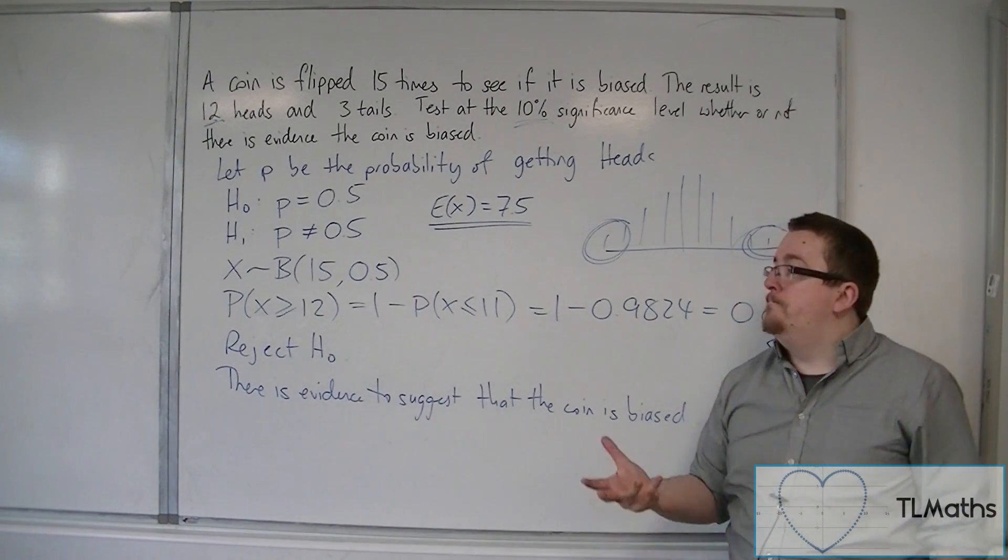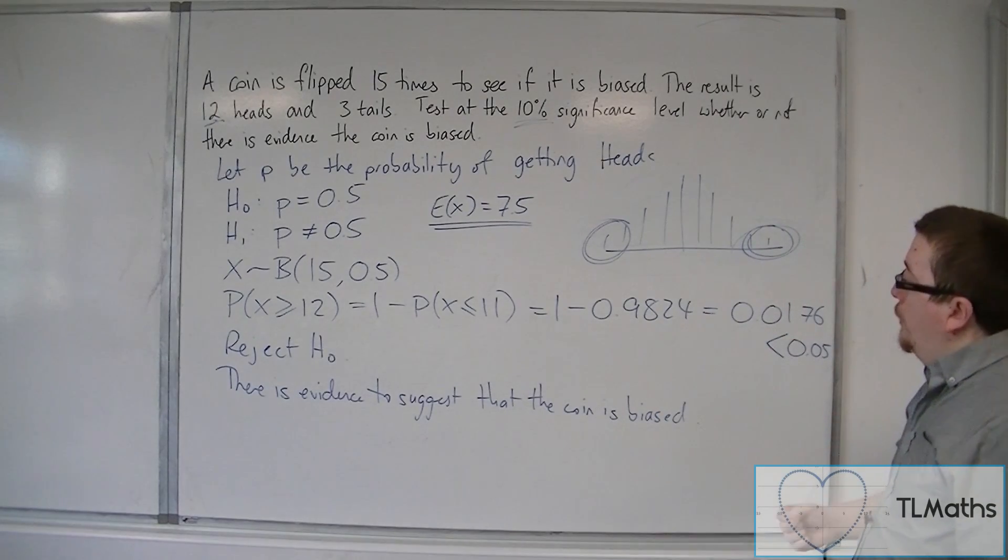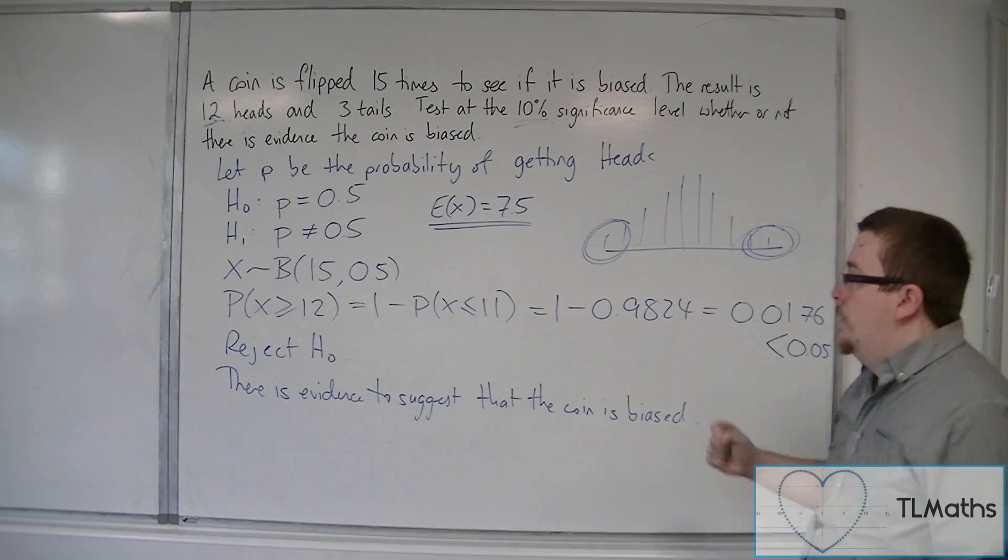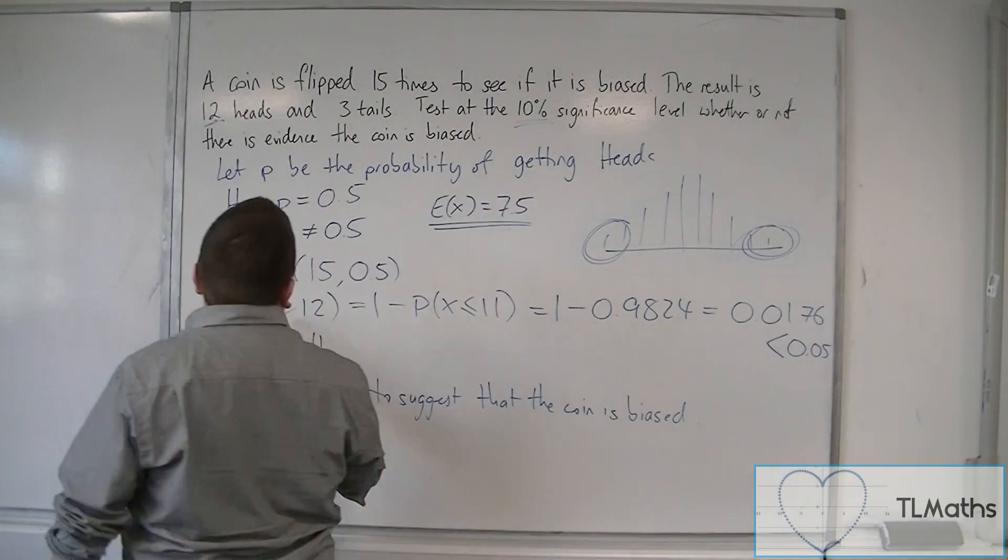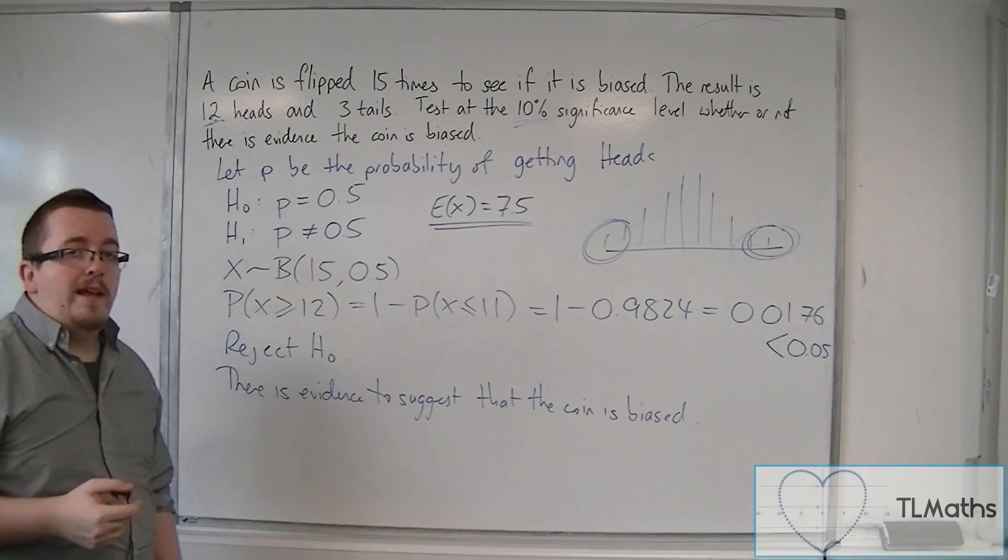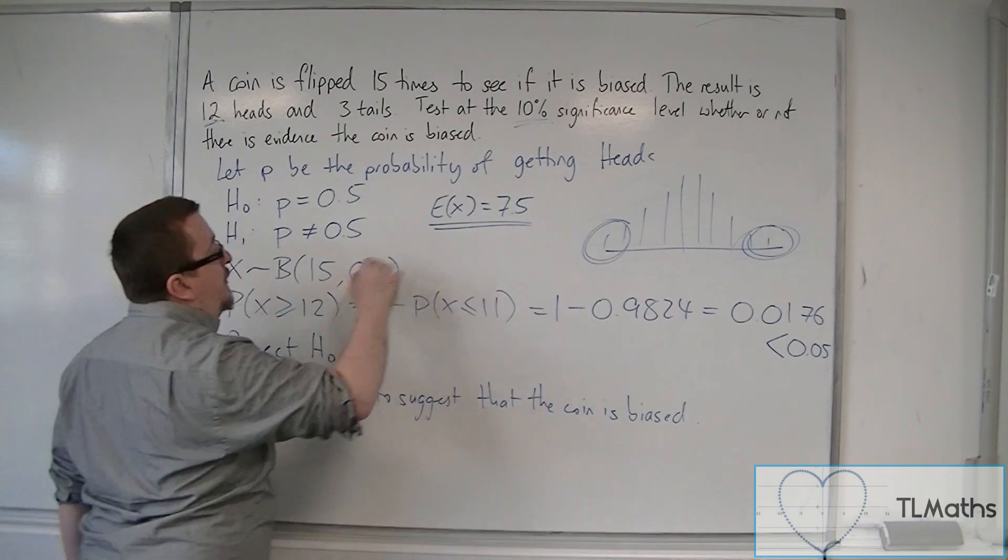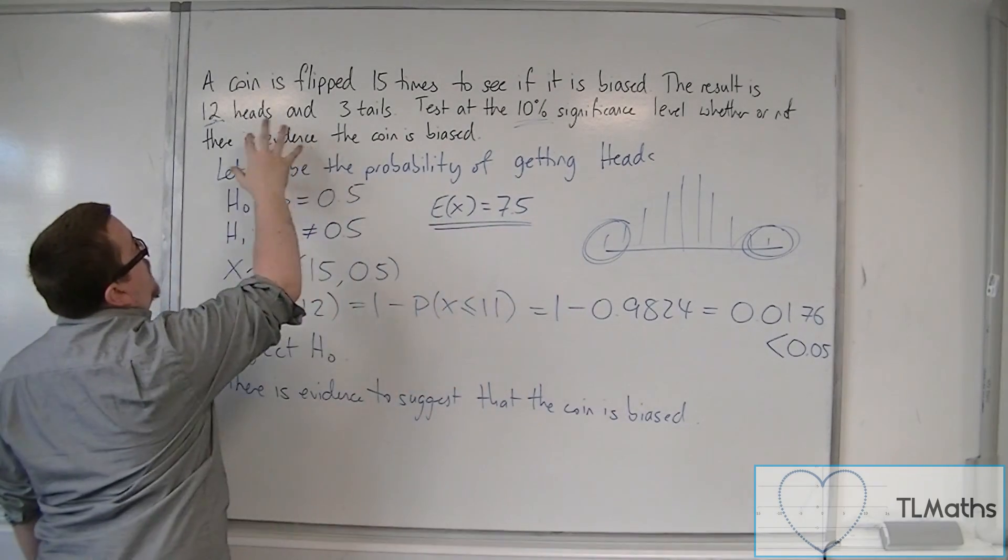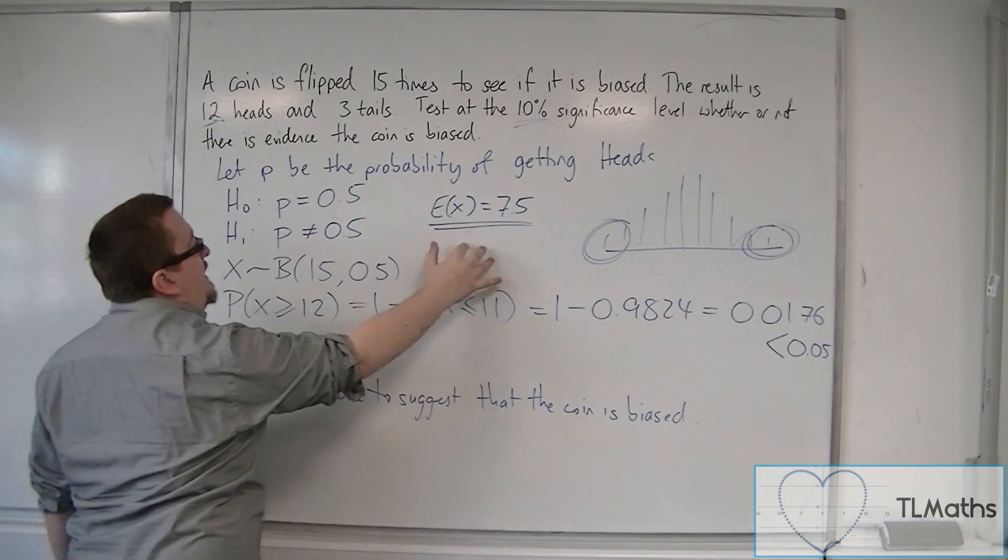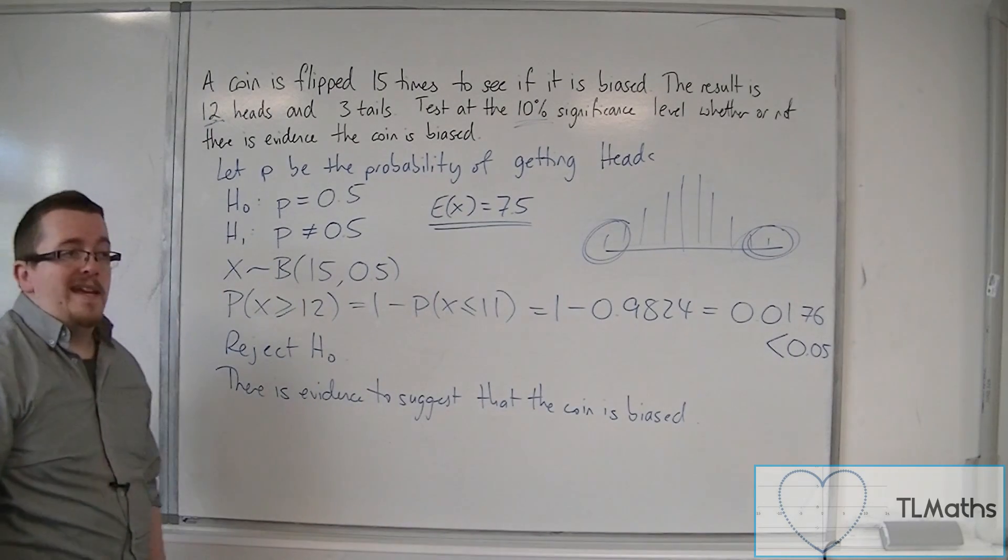So that's how this conclusion comes about. The real trick here is determining whether this should be greater than or equal to or less than or equal to. And that all comes down to comparing the actual number that we've seen against the expected value, E of X.